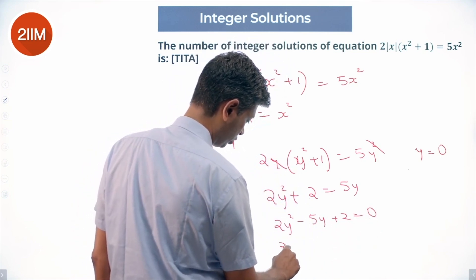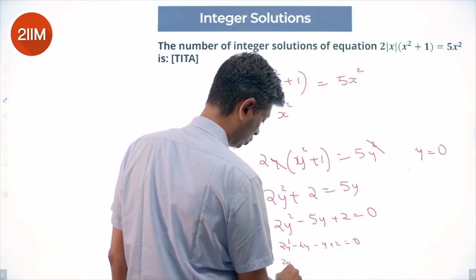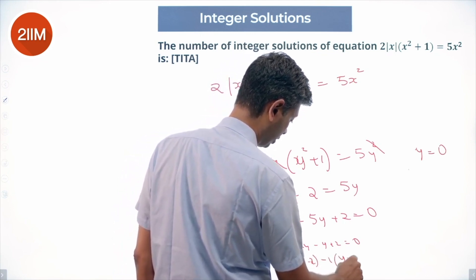So 2y² minus 4y minus y plus 2 equals 0. 2y(y minus 2) minus 1(y minus 2) equals 0.